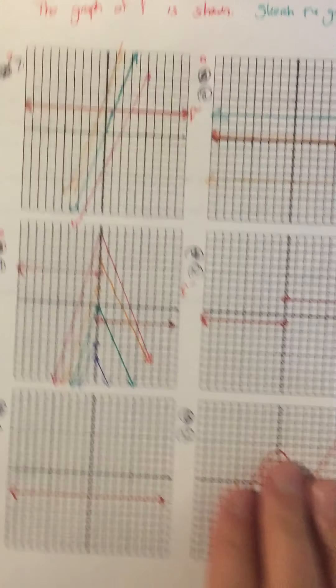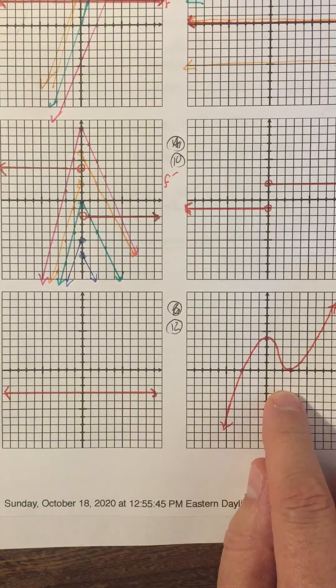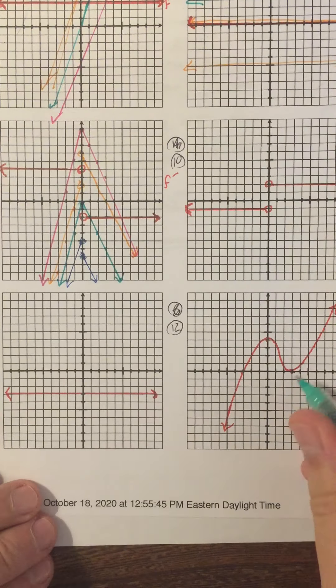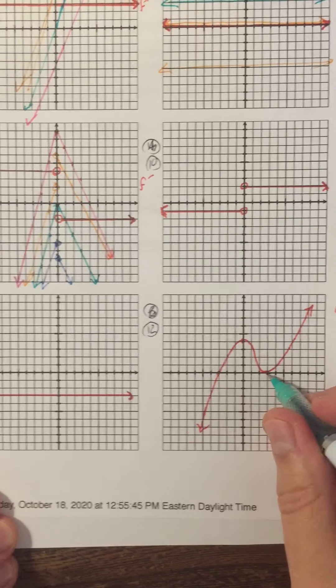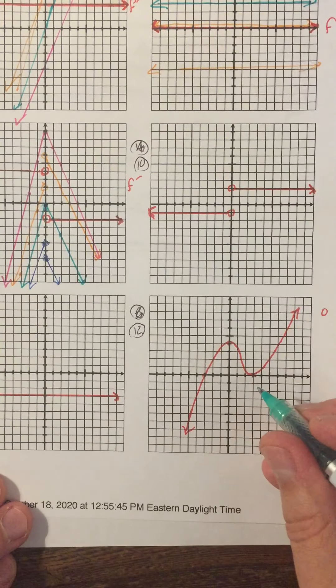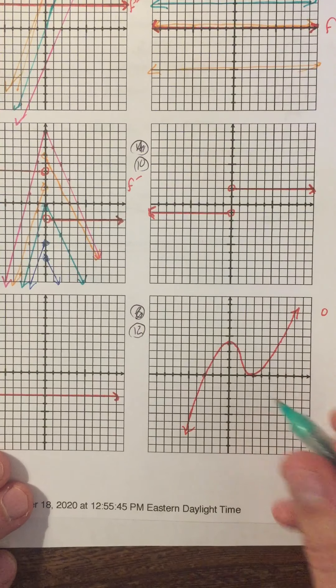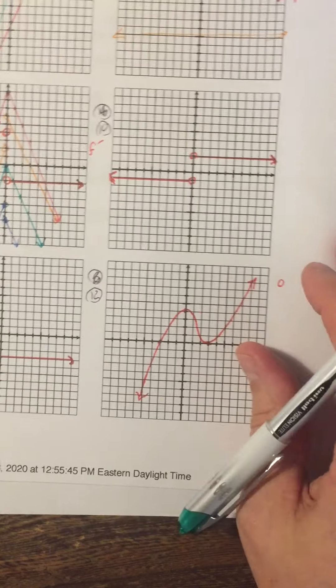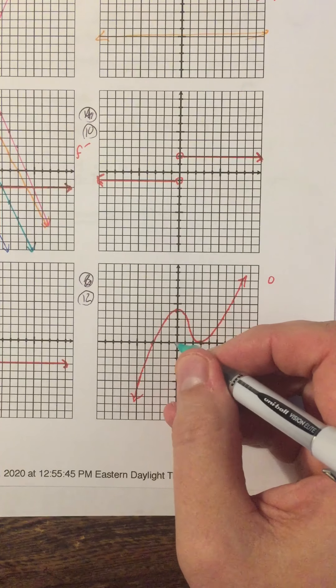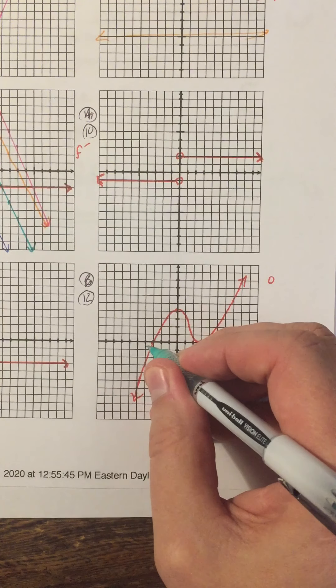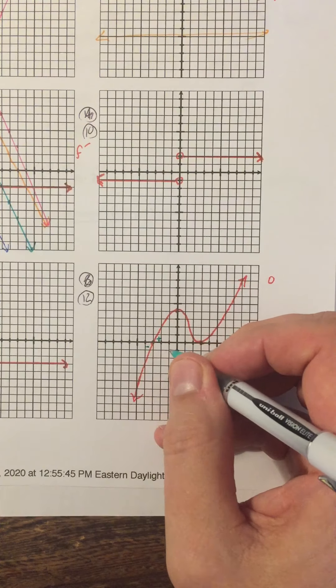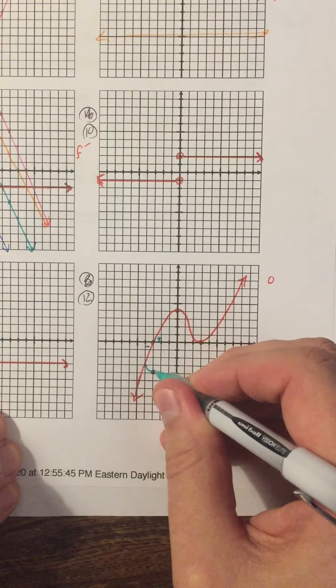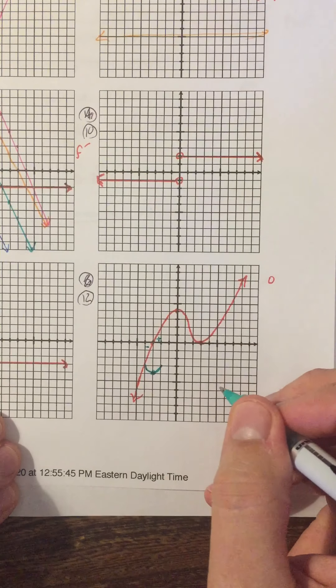Alright. I also want to do this one, number 12, because here's what's different about number 12. Number 12 has this point where f prime is zero, but does not change sign. So that's not a max or a min. So if I say start with the maxes and mins, and we're looking at number 12, here's a point at x equals negative 3, where f prime changes from negative to positive. Therefore f has a min. So let's put a min at x equals negative 3.